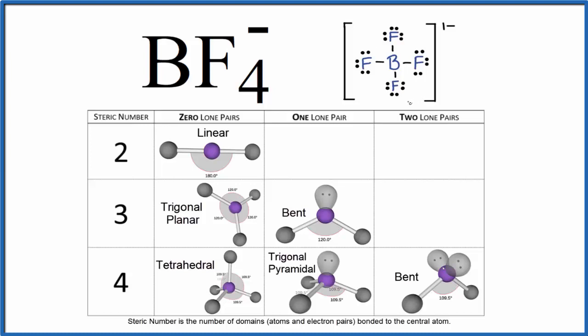So first we look at steric number. How many things are attached to the central boron atom? We have one, two, three, four things.